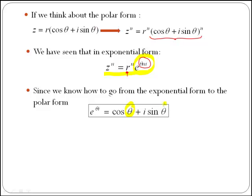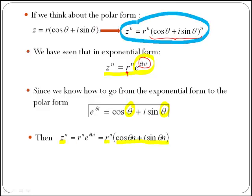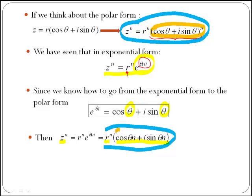The angle θ simply gets replaced by nθ, giving us that z to the n equals r to the n times (cos nθ plus i sin nθ). Comparing the polar power expression with this result, since r to the n equals r to the n on both sides, we conclude that (cos θ plus i sin θ) to the n equals cos nθ plus i sin nθ. This is known as De Moivre's formula.